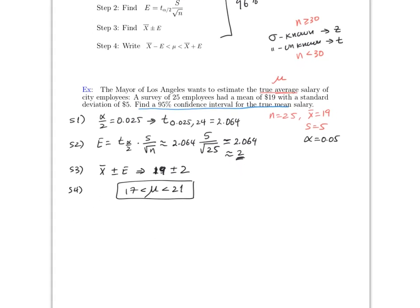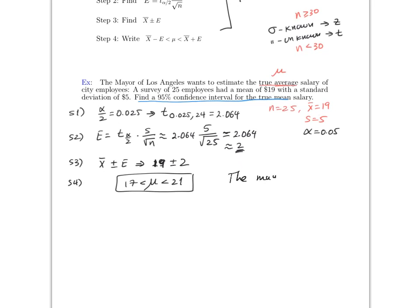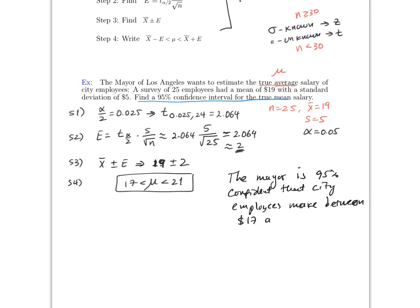The interpretation is: the mayor is 95% confident that city employees make between 17 and 21 dollars per hour. This is very similar to section 7.1 — the only difference is that you now have to find the t critical value, whereas before it was given.